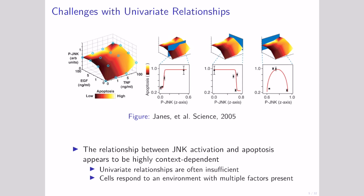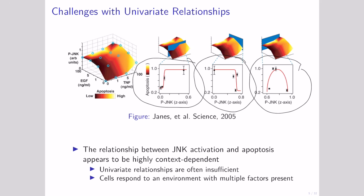For example, if we looked in one cell situation, we might say there's a positive relationship with a signal like phospho-junk. If we look in another situation, we might find a negative relationship. And in yet another, we might see a more complicated relationship. This shows that we often need multiple different measurements in order to make accurate predictions of how cells behave, so we're going to have to make lots of different measurements.